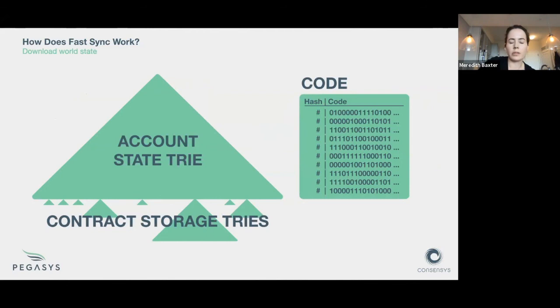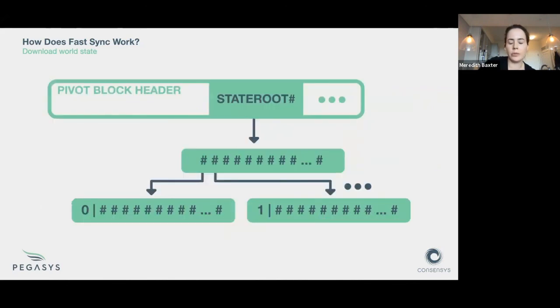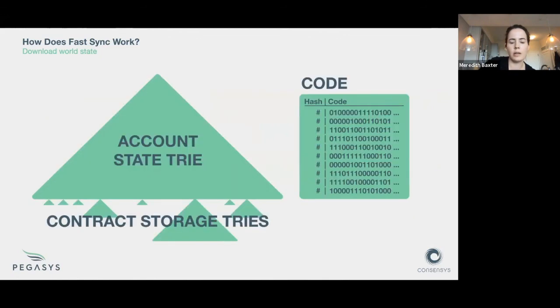This is kind of what the world state looks like in total. The state root is the root of the account state trie, which is that big blob on the left. The account state trie is basically a mapping between account address and account tuple. An account has a nonce, a balance, a code hash, and a storage trie root. So those extra bits of information, storage tries and the code, also have to be downloaded. You've got all these leaf account values at the bottom, and for the storage tries, you download them in the same way that you're downloading the account state trie. And the code is also similar. You're just requesting hashes that correspond to code.